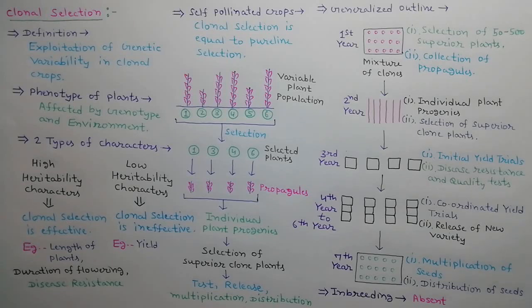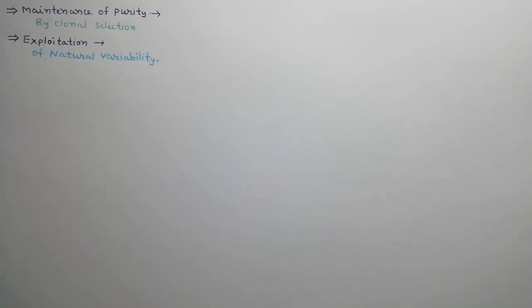In this method, inbreeding does not occur. Hence, genotypes of clones remain unchanged. Purity of clones can be maintained by using this method. This method is used for exploitation of natural variability present in crops.